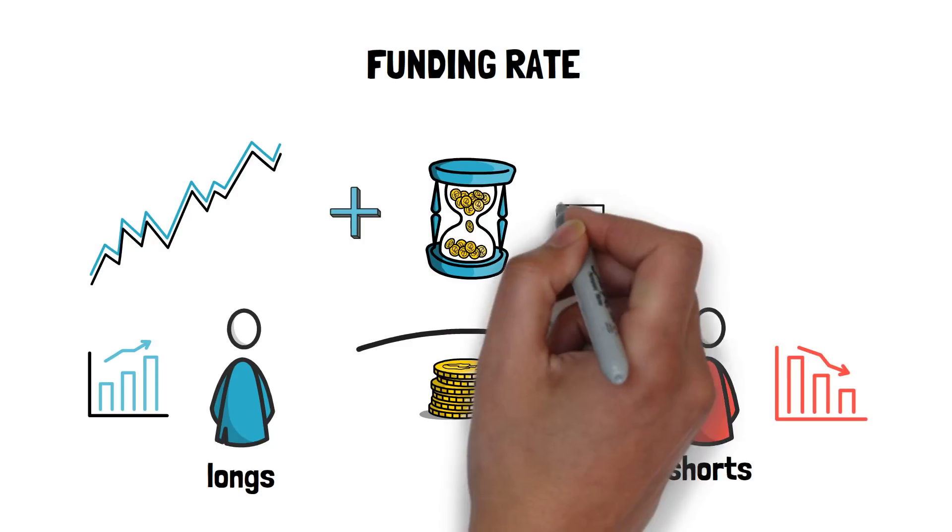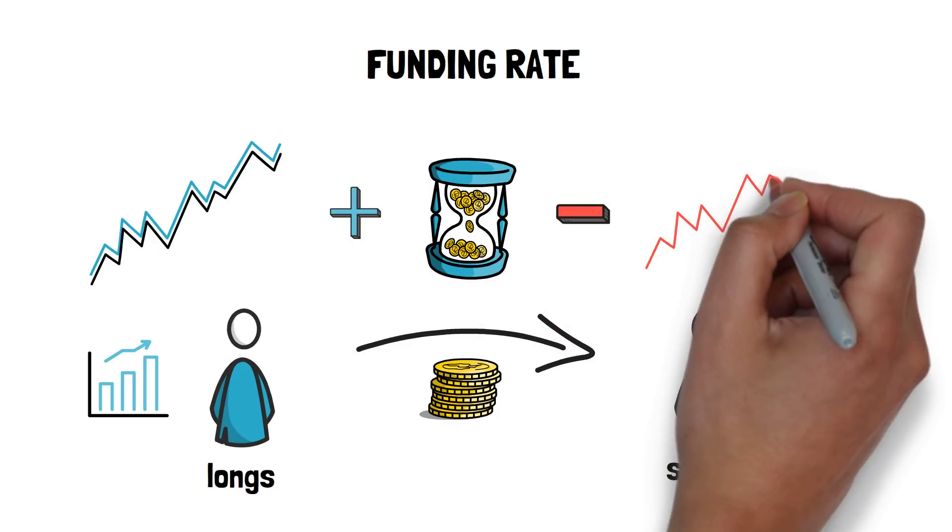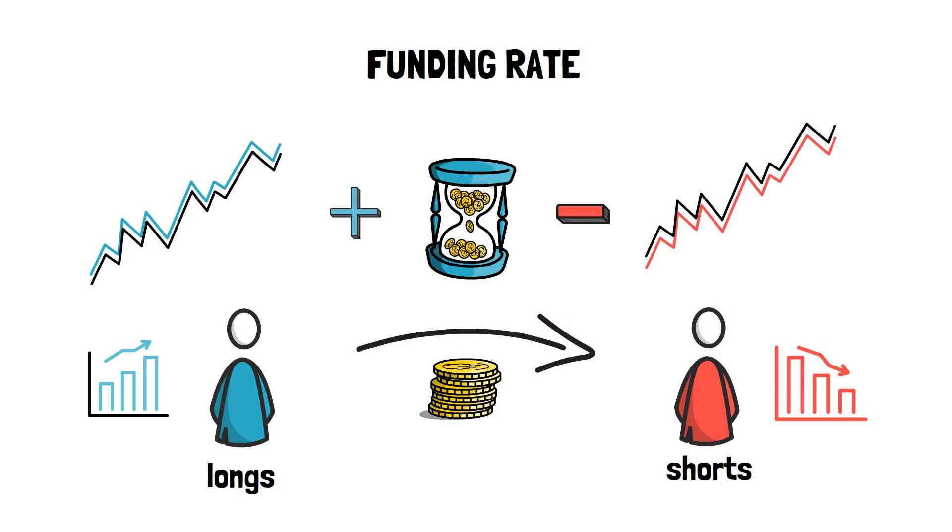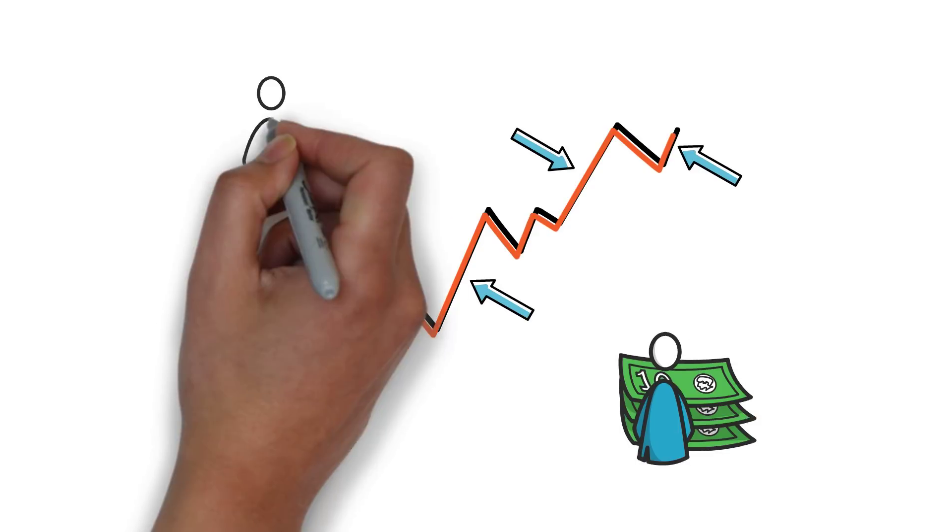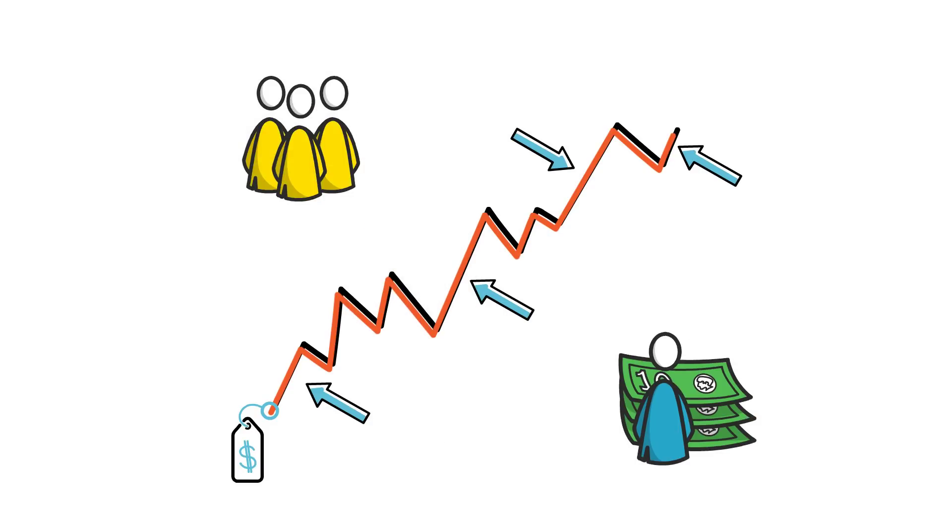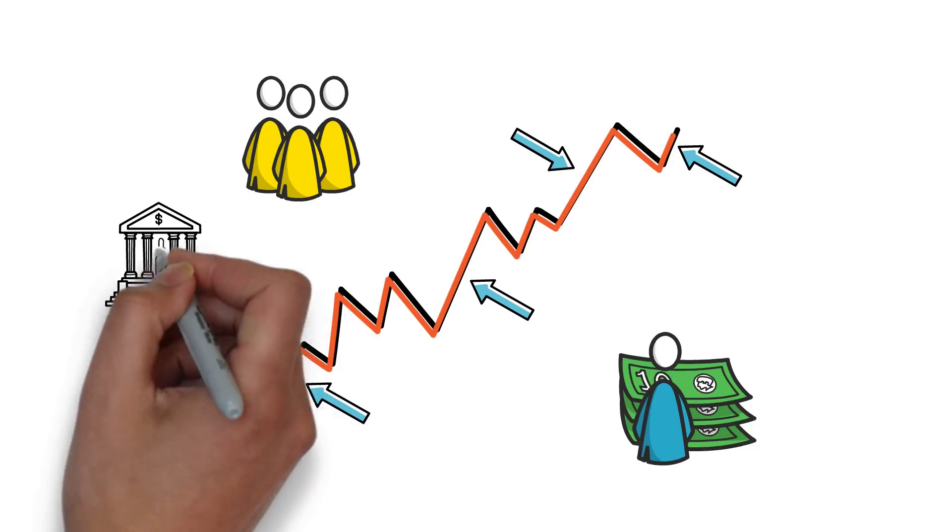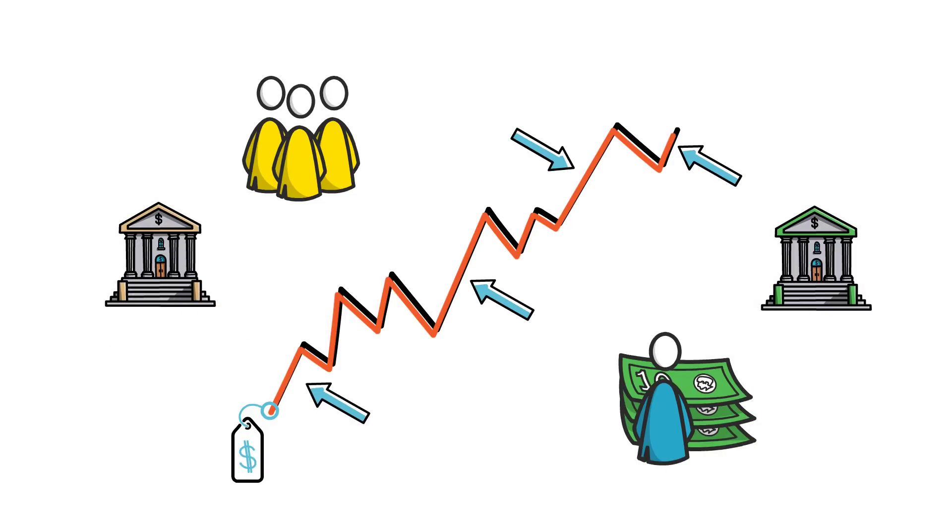The opposite holds when the price of the perpetual contract is below the spot price. In this case, shorts pay longs. This allows the price of the perpetual contract for a specific asset to converge with the price of its underlying. On top of the funding rate, price speculators and arbitrageurs also help with making sure the prices between different derivatives or spot exchanges don't diverge too much.